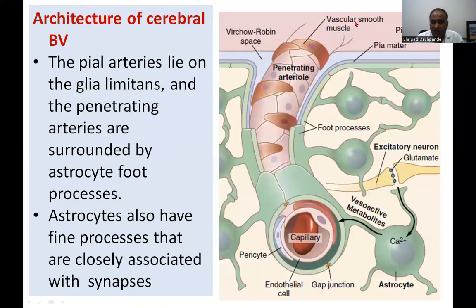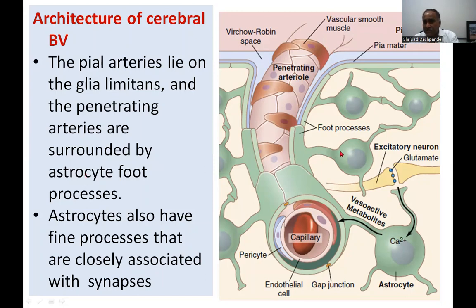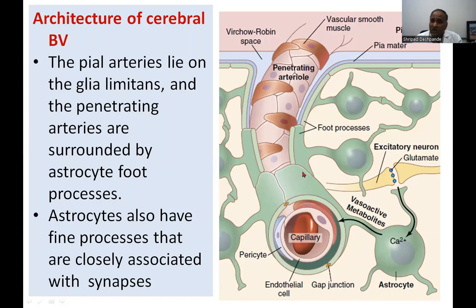Looking at the formation of these pial arteries, they are bounded by the glial limitans. The glial limitans prevent the entry of unwanted substances, as the vessels are surrounded by the astrocytic end-feet processes. These astrocytic end-feet almost embrace the blood vessels, creating a tight junction that does not allow materials to leak out into the brain.